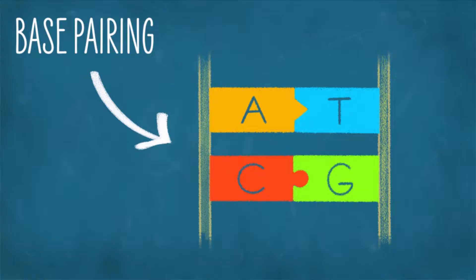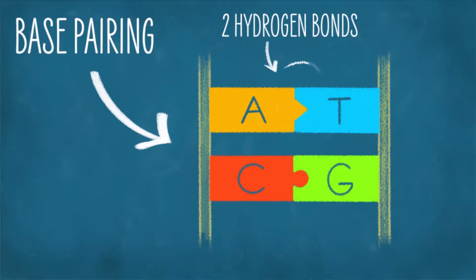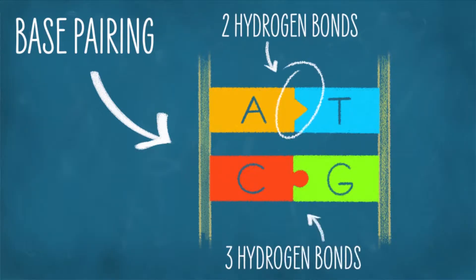I remember this because 'AT' is a common word and C and G look a lot alike — it's stupid but it works for me. The reality is that adenine and thymine bond to one another because they form two hydrogen bonds, and cytosine and guanine form three hydrogen bonds. The key is to know that A goes with T and C with G — if you know one side of the DNA molecule, you can predict the other.